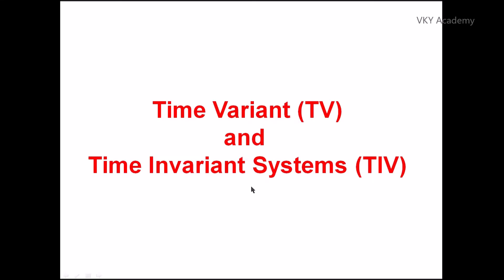Hello everyone. In the previous session we started discrete time systems and discussed the different classifications of discrete time systems. We also discussed the difference between linear and nonlinear systems and solved one example based on linearity and nonlinearity. In this session we will discuss one more classification of discrete time systems — that is time variant and time invariant systems. So let's get started.